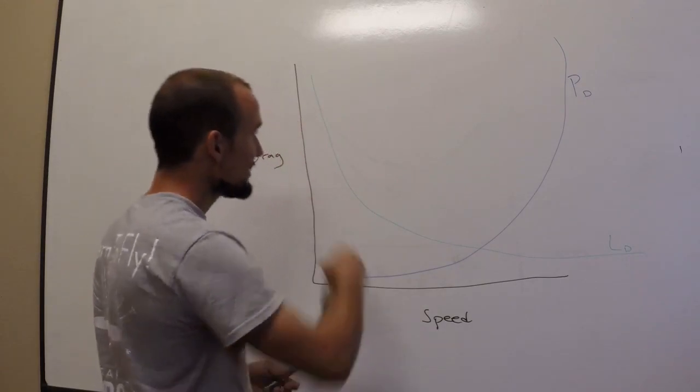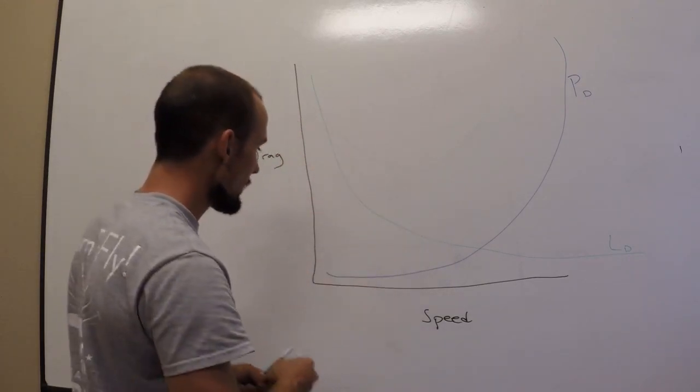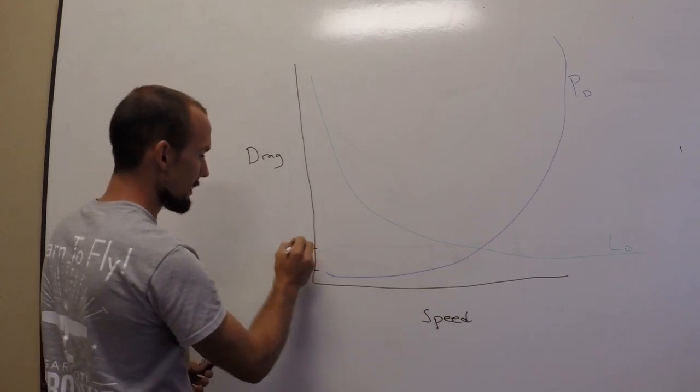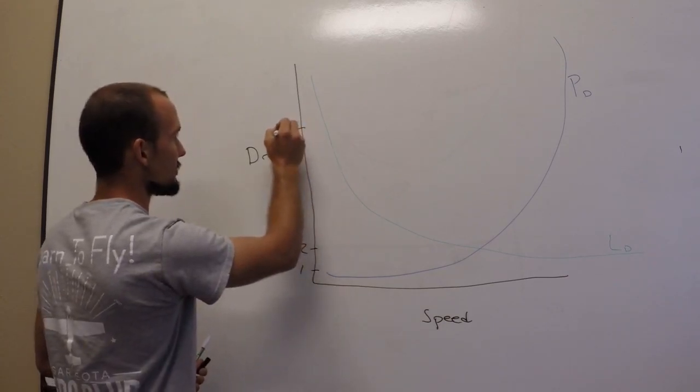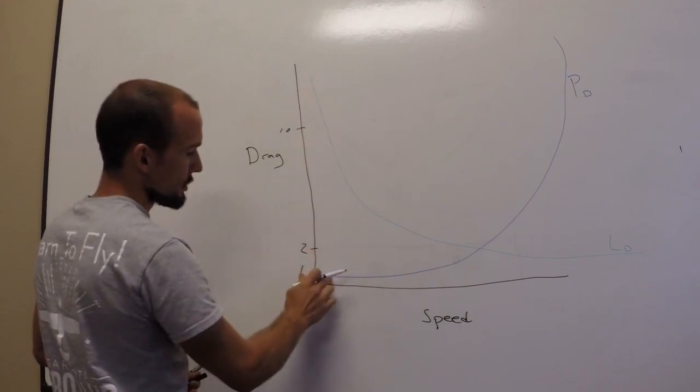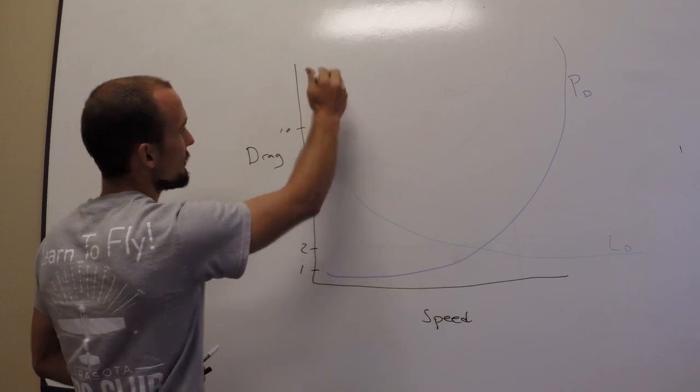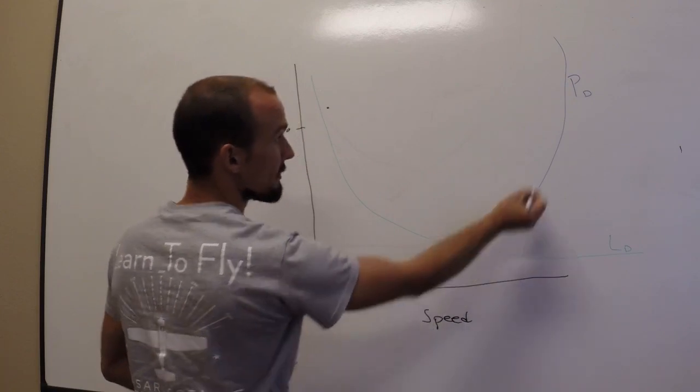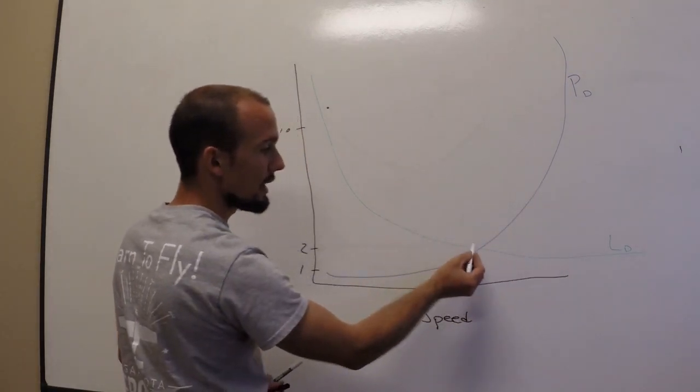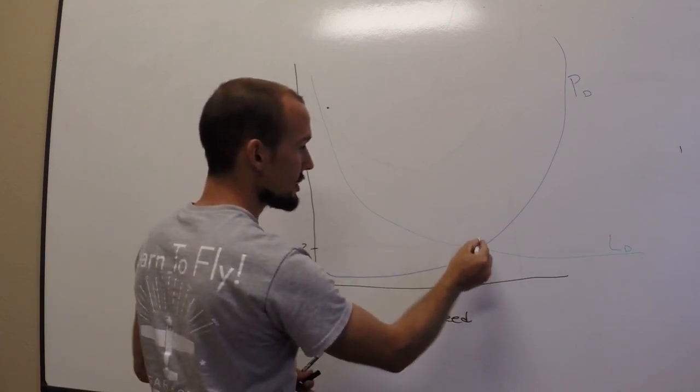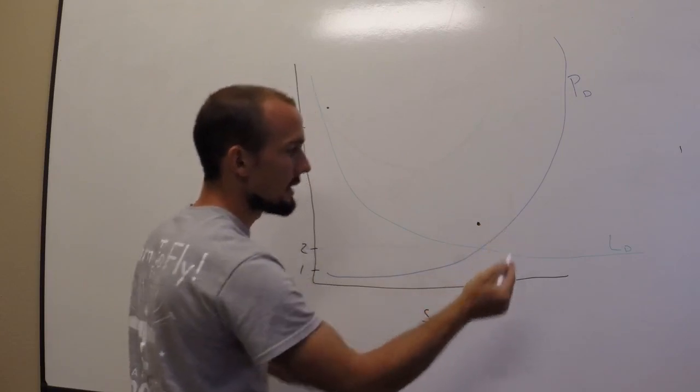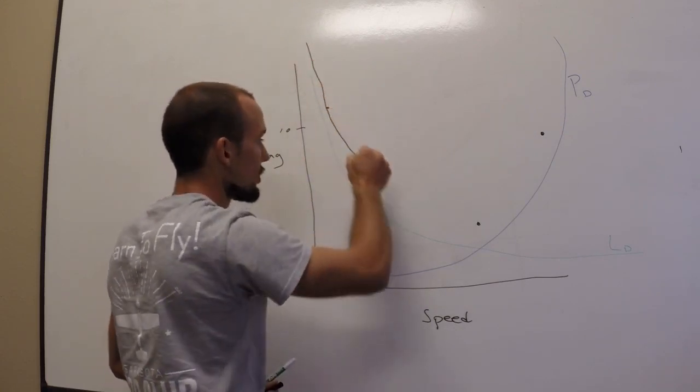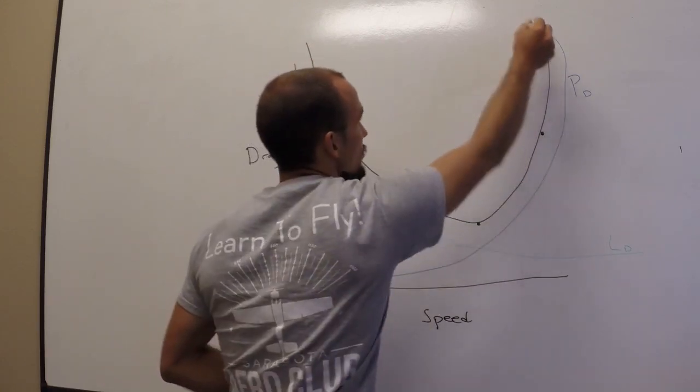Then we can add these two curves together to get our total drag. We'll just make up some fancy drag numbers here. We'll call this a drag factor of one, a drag factor of two here, up here a drag factor of ten. We can add these two together and connect all these dots, and we can get a curve that we'll call total drag, TD.